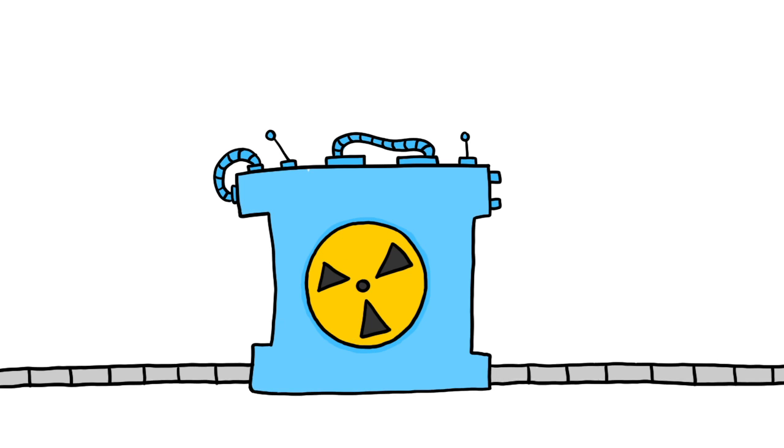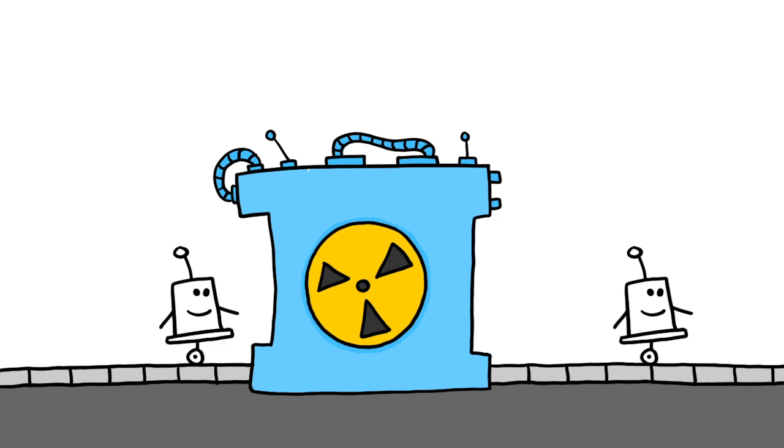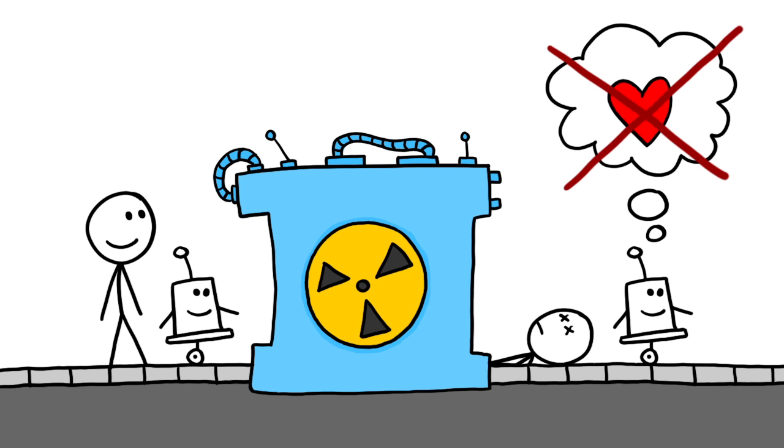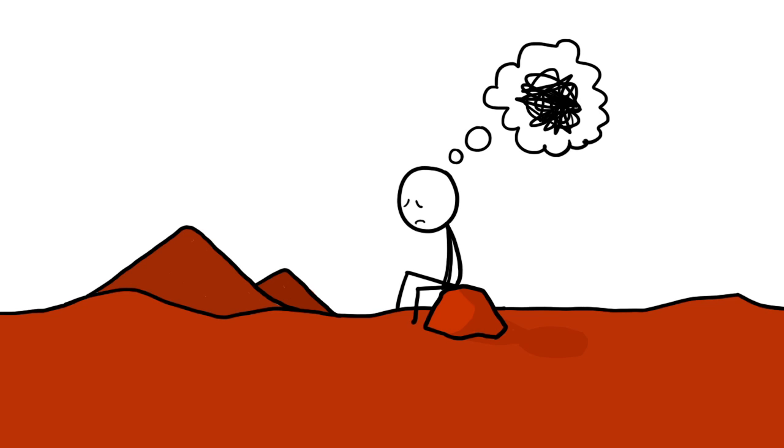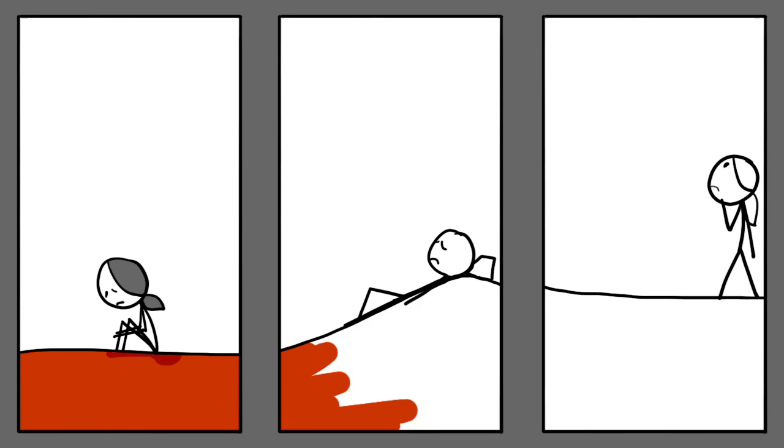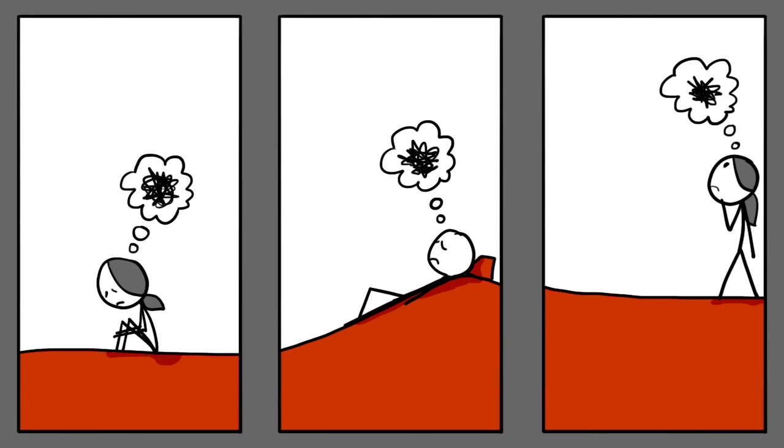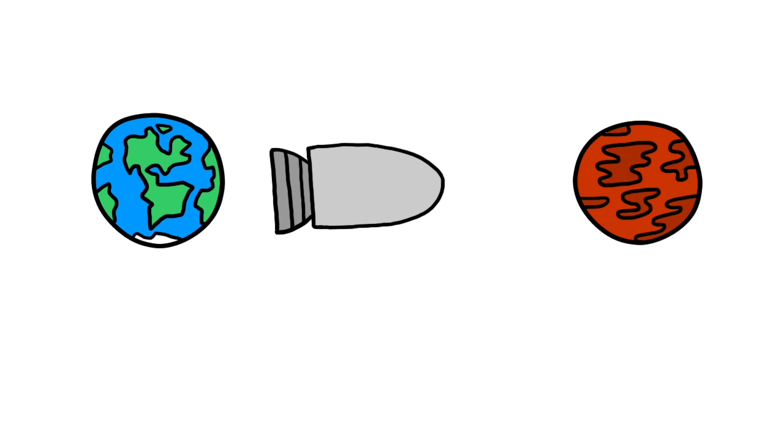But what about the journey itself? Rovers and probes are practically immune to the dangers of space and solar radiation. But humans? Not so much. Moreover, robots don't get nostalgic. The effects of living in almost complete isolation with very little contact with Earth can't be entirely too pleasant. For almost all the participants in simulations, the psychological issues are the hardest part.